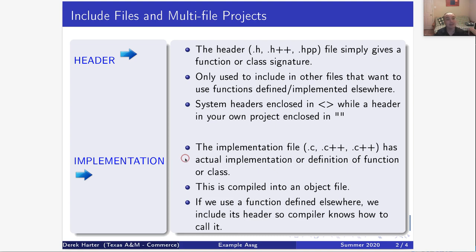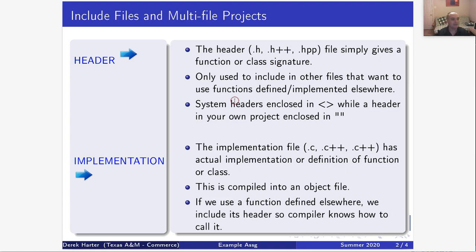C++, which inherits from C, basically breaks all code up into two parts. The declaration goes into what's known as the header file — that'll have a .h extension for regular C, or .hpp for C++ header files. The header file just has the function signature or class signature; it's not the actual implementation. We use the pound include directive to include header files, and really it's basically just doing a copy and paste — replacing the pound include with the contents of the file.